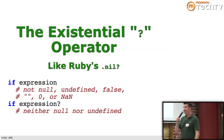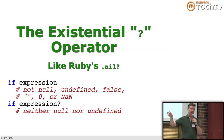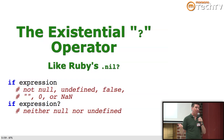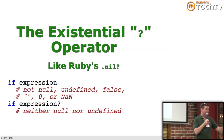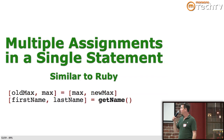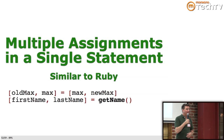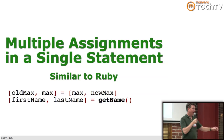The existential question-mark operator is like Ruby's .nil? Normally in CoffeeScript, the if-expression syntax means the same thing as in JavaScript — not null, undefined, false, empty string, zero, or NaN. But if you want to say 'is this thing neither null nor undefined' — the equivalent of .nil? — you put a question mark on the end. You can also put multiple assignments into a single statement similar to Ruby, with brackets on the left side. You can swap variables, call a method that returns multiple values, or use splat assignment.